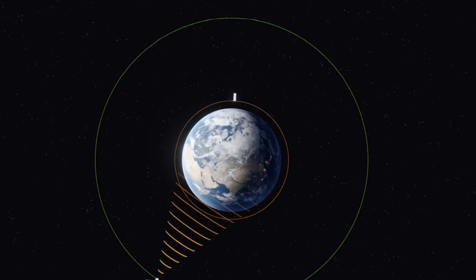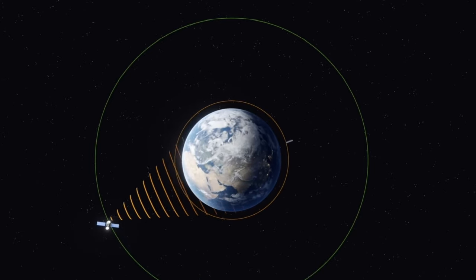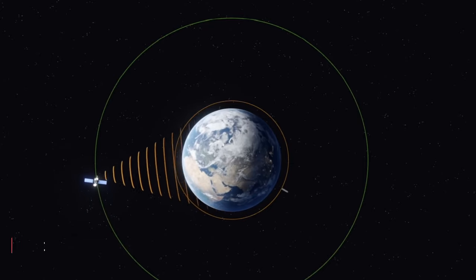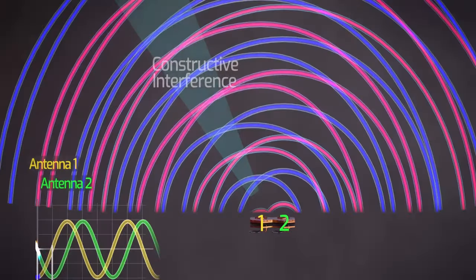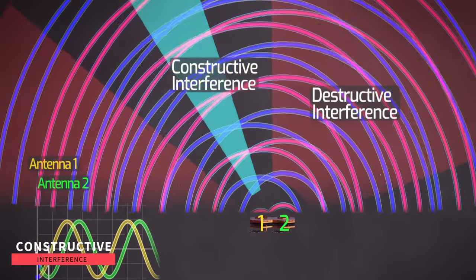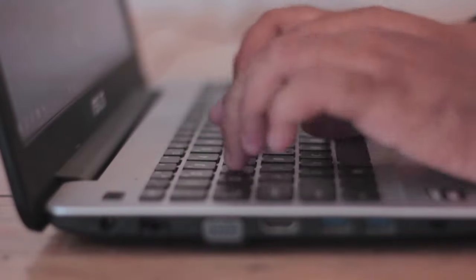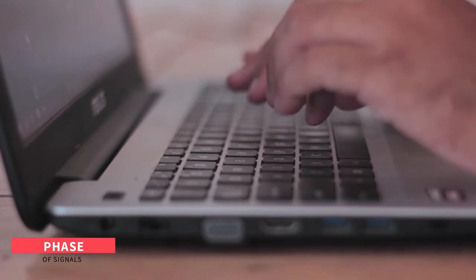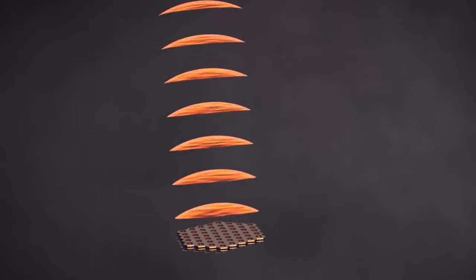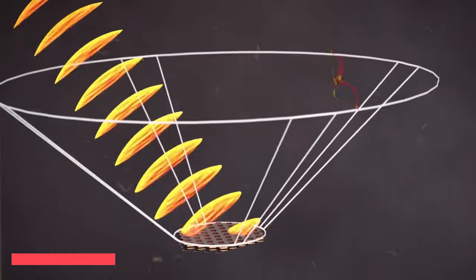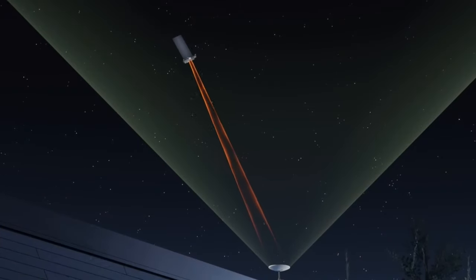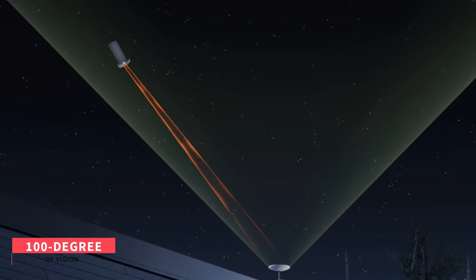Phased array beam guiding comes to the rescue. By adjusting the phase of the signal to each antenna, we control the beam's direction. Phase shifting alters when each antenna emits peaks, creating constructive interference in specific directions. By systematically varying the phase of signals to the antennas, we generate a wide area of constructive interference, steering the beam. This allows us to aim the beam within a 100 degree field of vision.